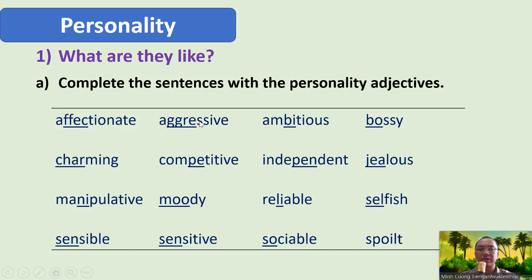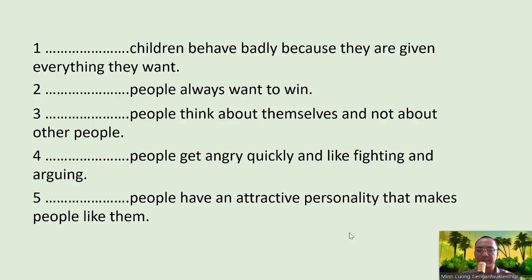Next, 'aggressive' — stretch the syllable 'gress': aggressive, aggressive. Then 'ambitious' — stretch 'bi': ambitious, ambitious. Then 'bossy' — stress the first syllable 'boss': bossy, bossy. And we also have: charming, competitive, independent, jealous, manipulative — stress the syllable 'nip' — moody, reliable, selfish, sensible, sensitive, sociable, and spoiled.